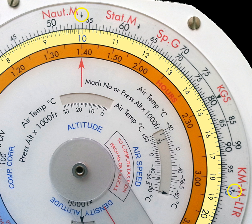Looking at the inner ring for minutes traveled, the distance traveled will be above it on the outer ring. This can also be done backwards to find the amount of time it will take to travel a given number of nautical miles.